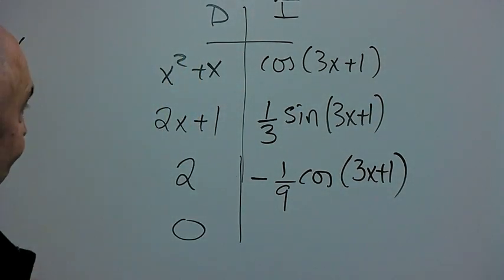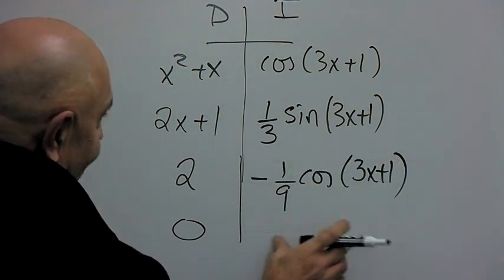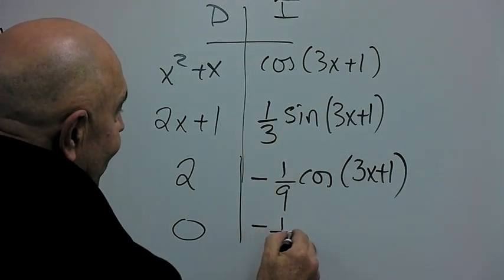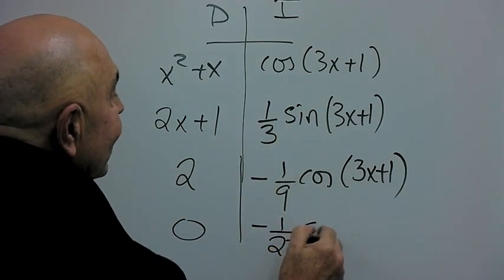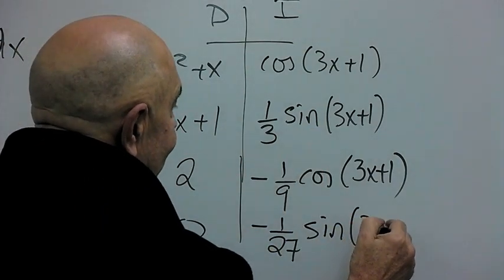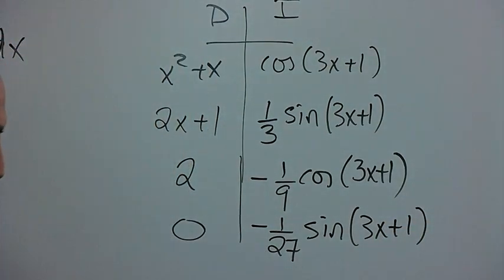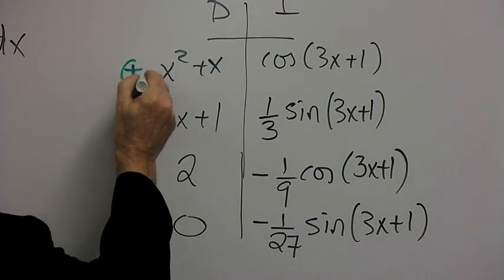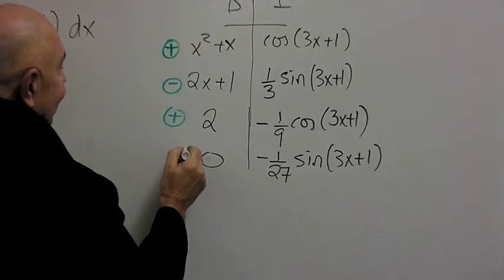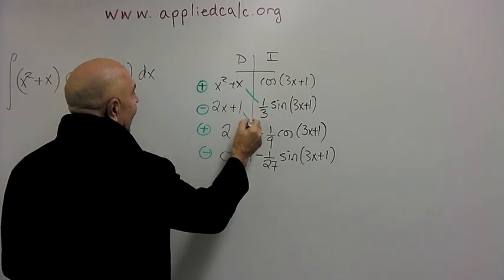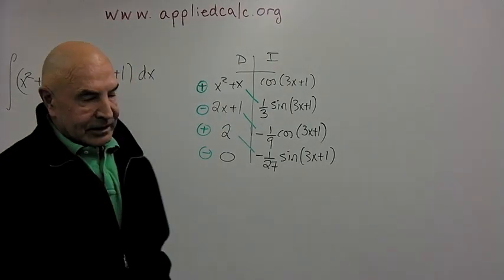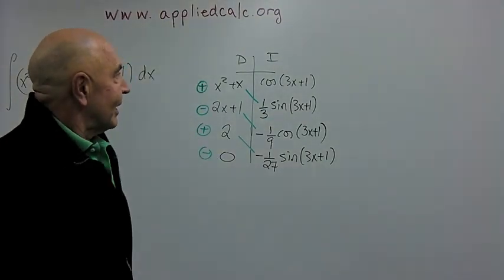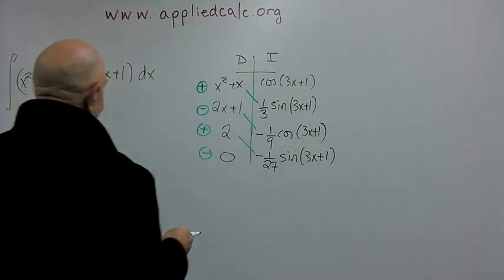Do it one more time, and we're done. If you do it one more time, it becomes minus 1/27. It flips back to sine, and we're all finished, except for this nice little trick of writing down the answer. And remember, we put alternating signs plus, minus, plus, minus, and multiply going down diagonally, and then write the answer down. Isn't that nice and easy?